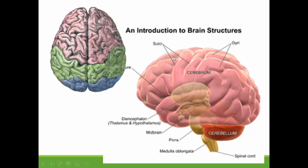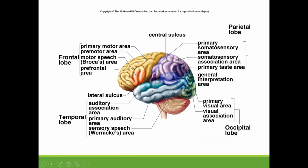You can also see in this diagram how the cerebrum is on the top, and because it's see-through, we can see the location of the thalamus and hypothalamus and then the midbrain, the pons, the medulla oblongata, as well as the cerebellum.